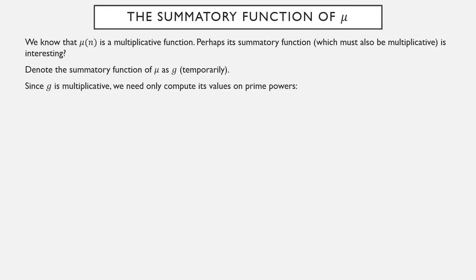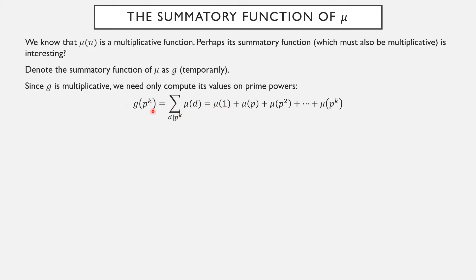Temporarily we'll denote the summatory function of µ as g. Since g is multiplicative, we only need to compute how it acts on prime powers. The divisors of prime powers are easy to list out, so we plug them all into the Möbius function µ. These powers of primes are easy to evaluate — all higher powers of the prime are divisible by p², so the Möbius function outputs zero. As long as k is one or bigger, g of p^k works out to be zero.